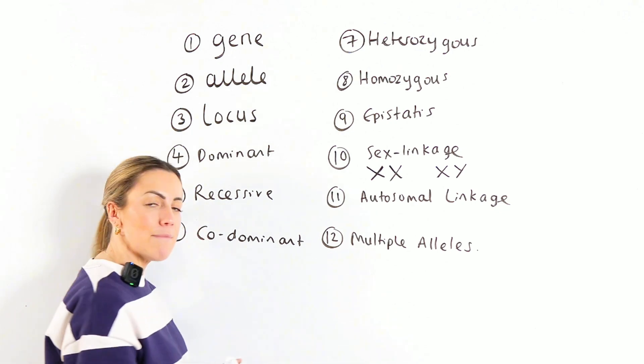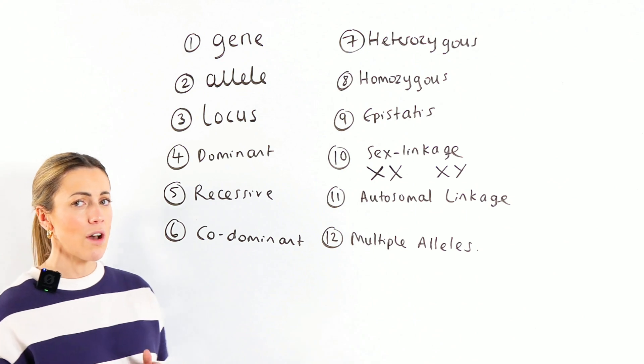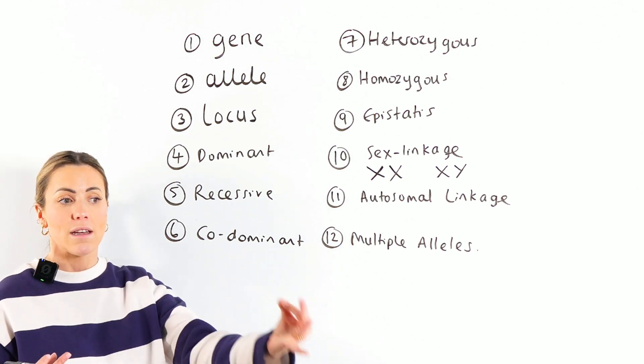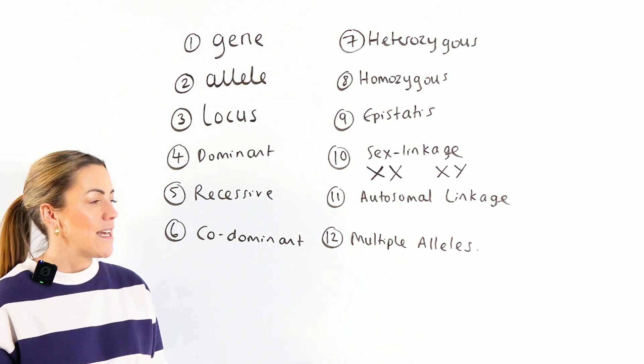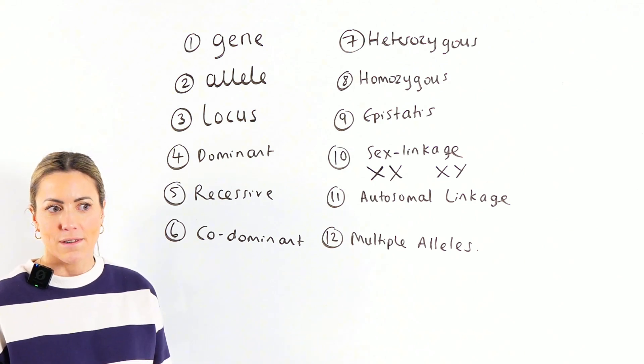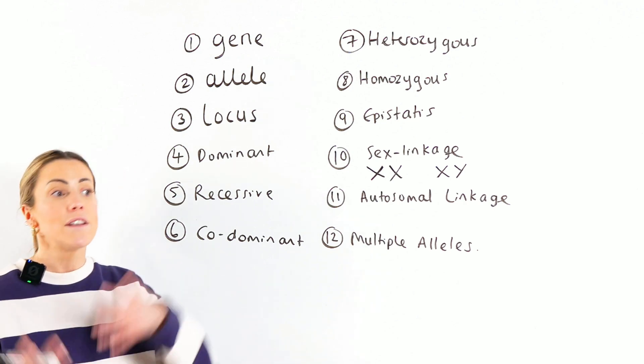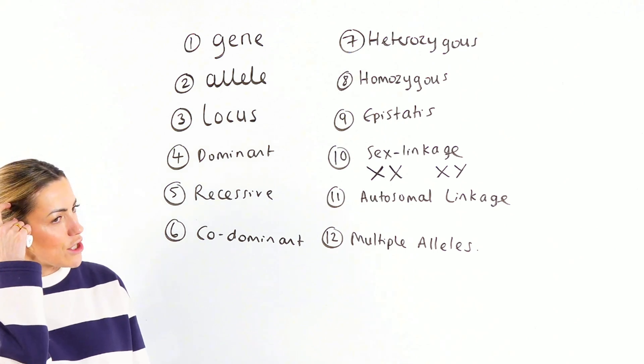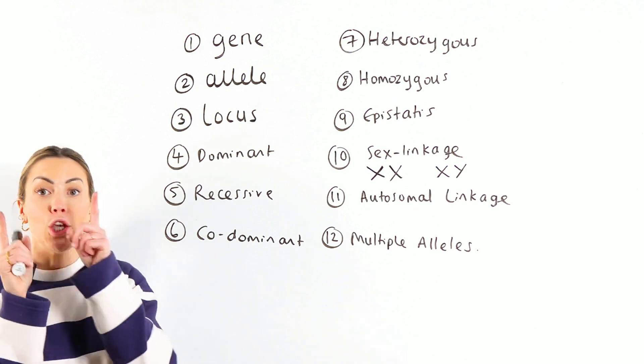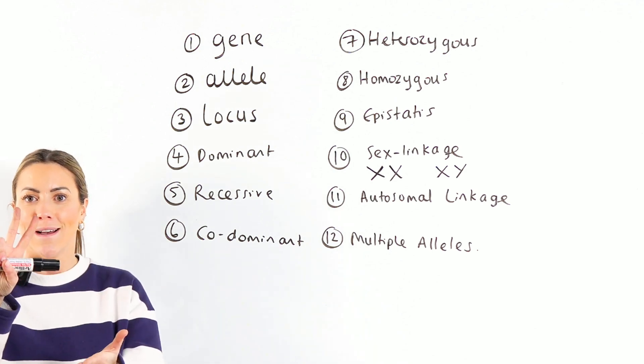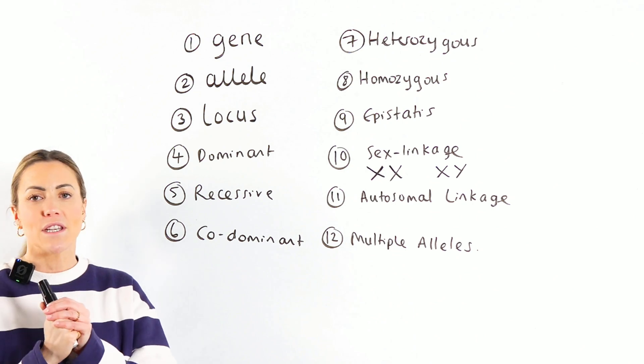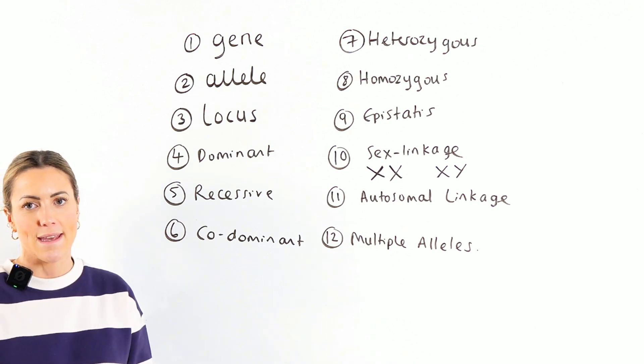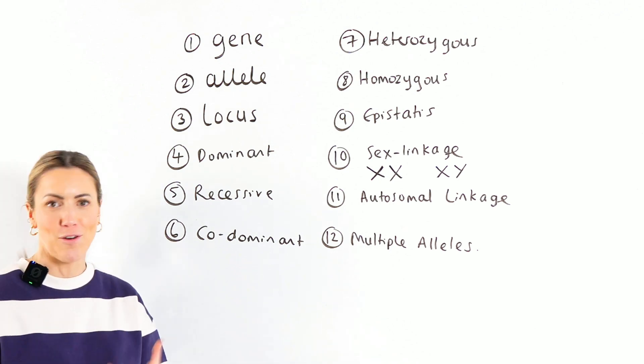Finally, multiple alleles. I thought I'd mention this one because it does confuse some students. When we say multiple alleles, we just mean that for a gene, there are multiple alleles. As in, there's not just two alleles. There's three alleles of that gene. There's four alleles of that gene. There's multiple versions of that gene. But remember, this is where I've seen students kind of fall apart. You can only inherit two alleles. So even if there's four different alleles in the population, you will only inherit two of them, okay? Because your chromosomes are in pairs. You can't have all four.